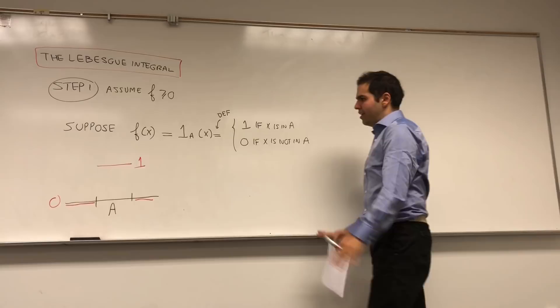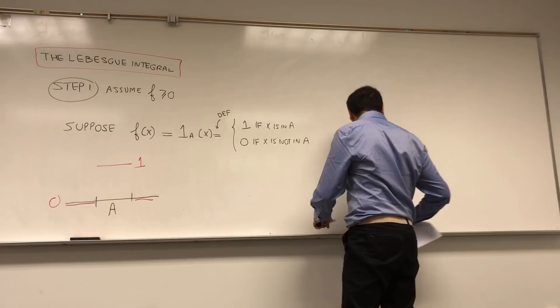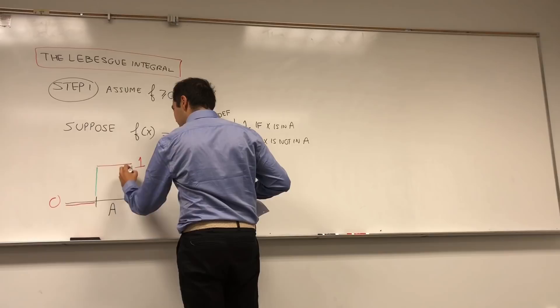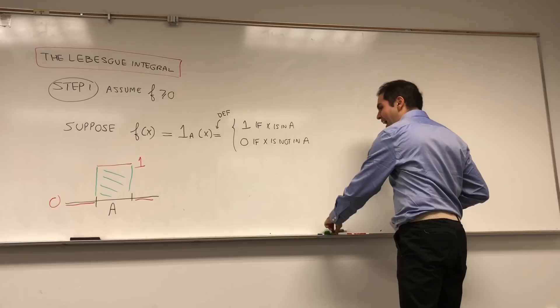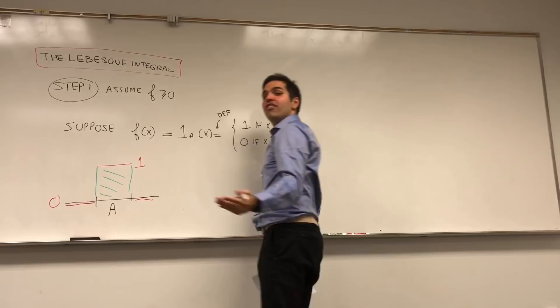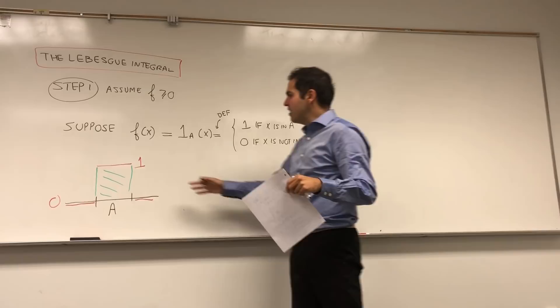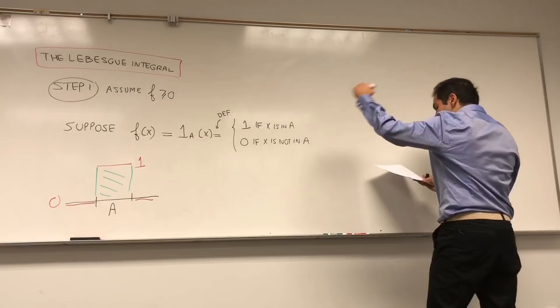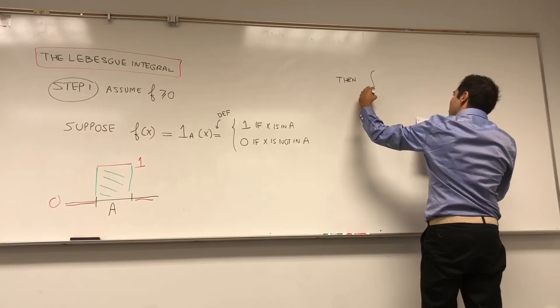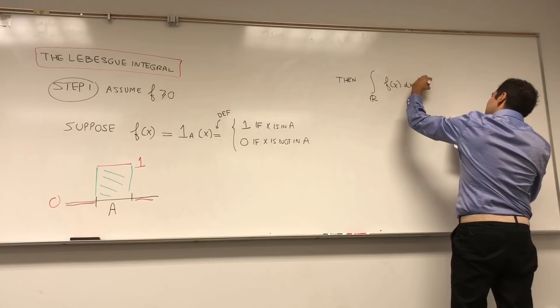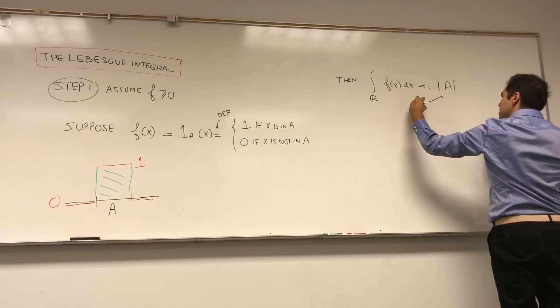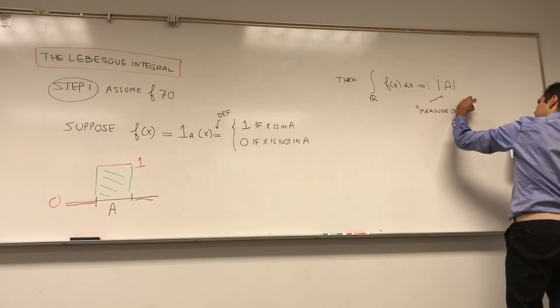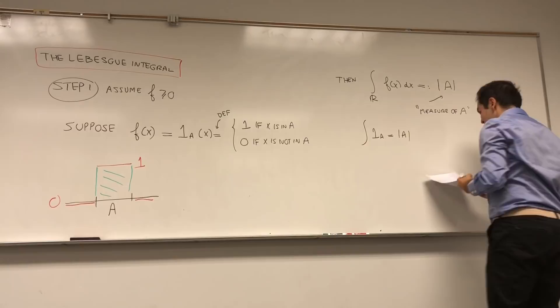The question is: what should be the area under this function? The area in this case is base times height, but the height is one of course. The length is whatever the length of A is, so the area under f is just the length of A, or what's called the measure of A. So the integral of f over ℝ is defined to be the measure of A.